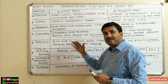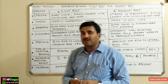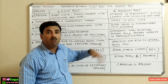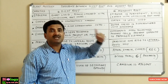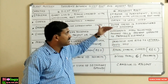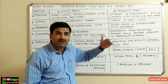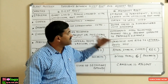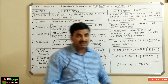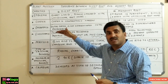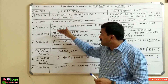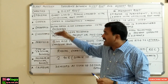In the monocot root, the endodermis is more thickened, with greater deposition of lignin and suberin. The passage cells are more clearly present and are located just opposite to the protoxylem elements. Just below the endodermis is the pericycle — the layer present between the endodermis and the vascular bundles.